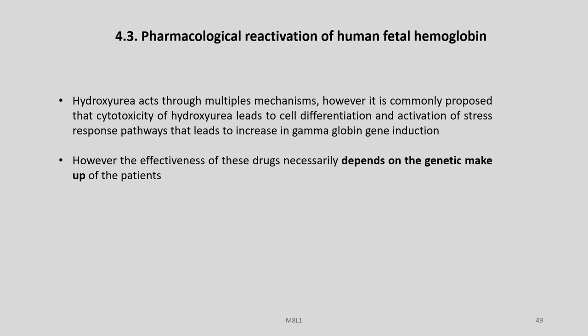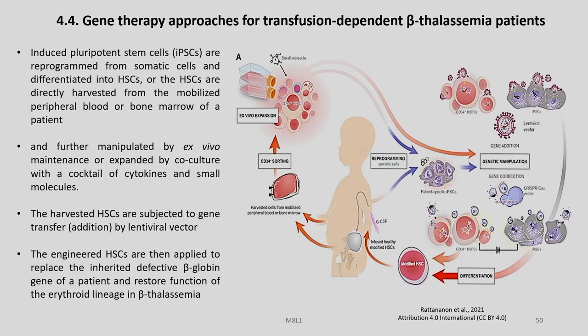Hydroxyurea acts through multiple mechanisms. It is commonly proposed that cytotoxicity of hydroxyurea leads to cell differentiation and activation of stress response pathways, leading to increased gamma globin gene induction. However, the effectiveness of these drugs necessarily depends on the genetic makeup of the patients, which varies from individual to individual.